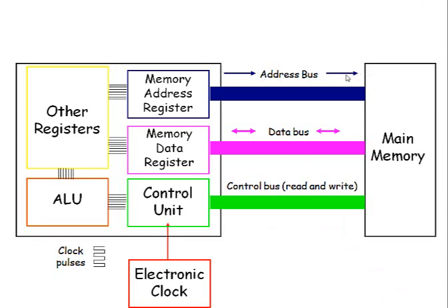We've got the address bus — as you can see, there are arrows that go in one direction — and the data bus, where the arrows go in both directions. That's because the address register only carries data to point to some location in main memory. The data bus goes two ways because either data can be written into memory, taking it from the memory data register into main memory, or if it's doing a read operation, the data comes along the data bus into the data register — so it travels both ways.